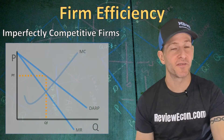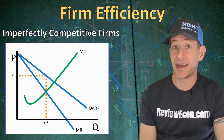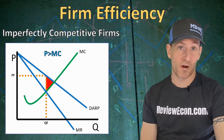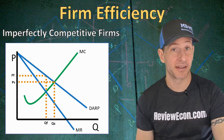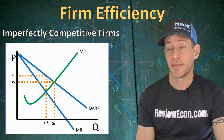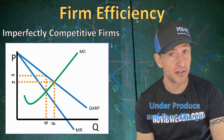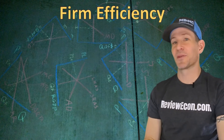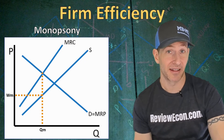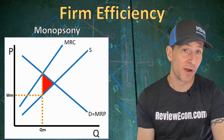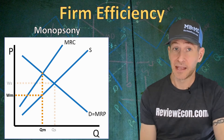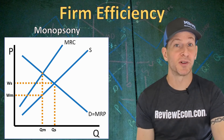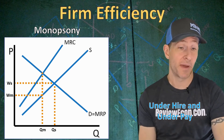When it comes to imperfectly competitive firms, there will be some deadweight loss at the profit-maximizing quantity, because the price is greater than the marginal cost at that quantity. The socially optimal quantity will be where the marginal cost equals the demand curve, at QS. Imperfectly competitive firms underproduce and overcharge at the profit-maximizing quantity, and they are not socially efficient as a result. When it comes to labor markets, a monopsony is also not allocatively efficient and has that triangle of deadweight loss. If a monopsony were socially optimal, it would hire QS workers and pay WS for the wage, but they underhire and underpay compared to a competitive market.